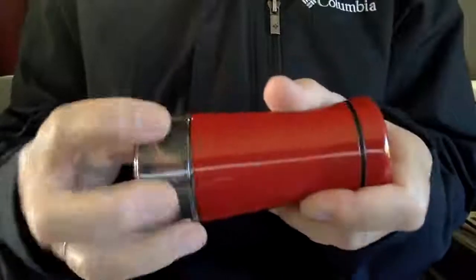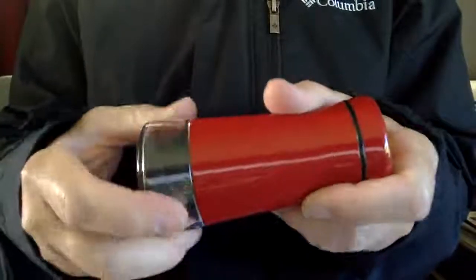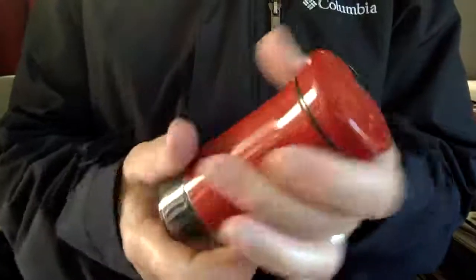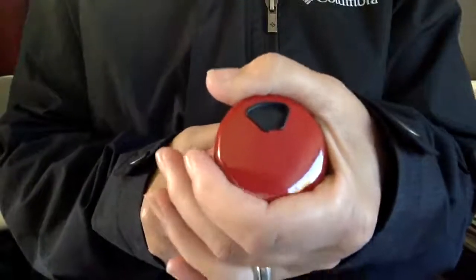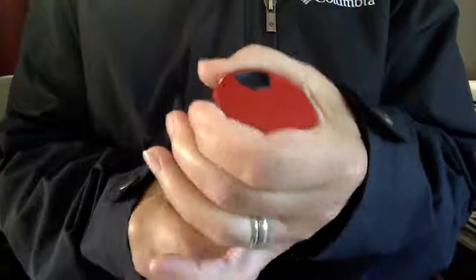What can happen is first of all, this base has to be on quite snug, and then this lid has to be on quite snug. Now what happens, you can turn it real tight and then it can be very tight to turn.